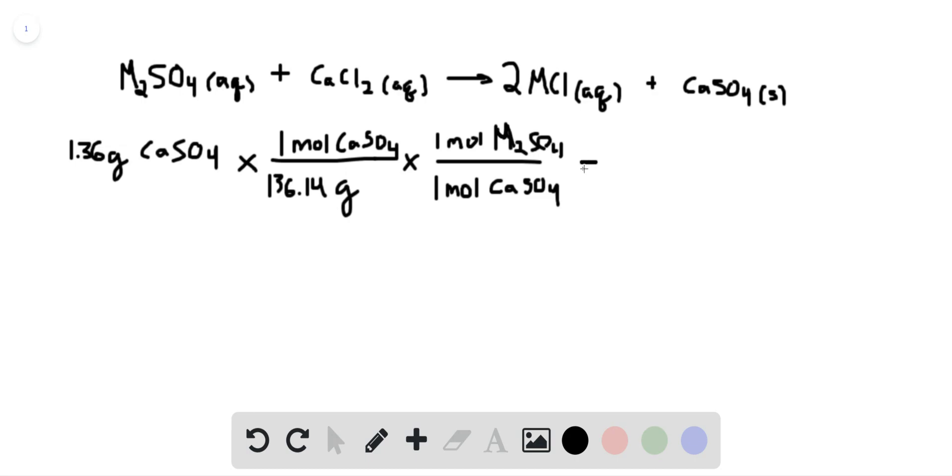Okay, and with this we can cancel out units. Grams cancels, moles cancels, we're left with moles of M2SO4. This answer is 0.01 moles of M2SO4.